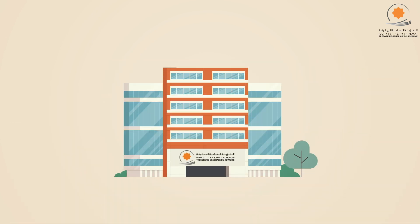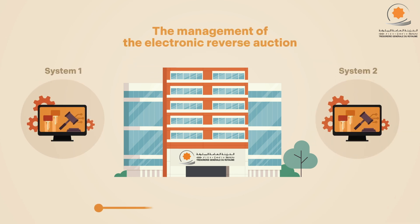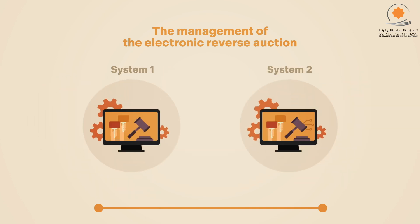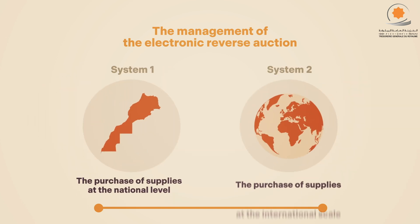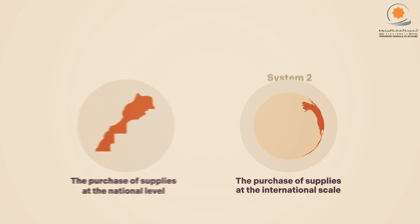In this context, the General Treasury of the Kingdom has developed two subsystems for the end-to-end management of the Electronic Reverse Auction: the first for the purchase of supplies at the national level, and the second for acquisitions at the international scale.